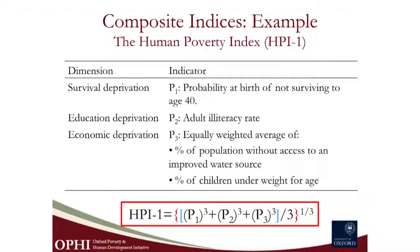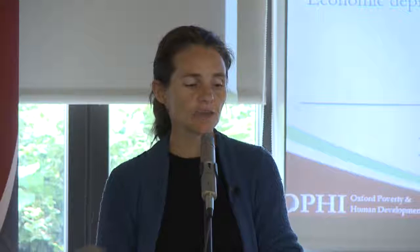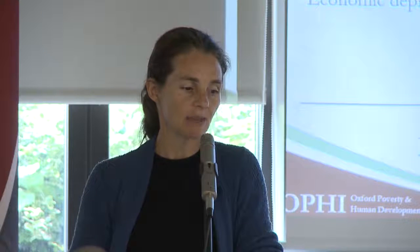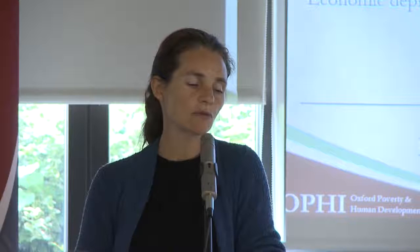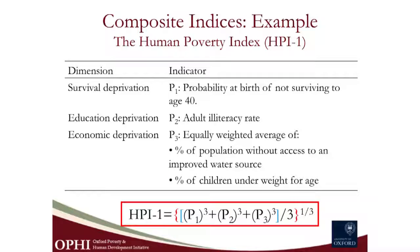In 1997, Sudhir Anand and Amartya Sen constructed the Human Poverty Index. At that time, there was not enough microdata available to construct an internationally comparable index using microdata from the same survey, so they had to use marginal measures. It is a general mean of order three, of three dimensions and four indicators: the probability of not surviving to age 40, adult illiteracy, the population without access to improved water, and the percent of children underweight for age. You cube each index, take the average, and then take the cube root. But this uses marginal measures, so it does not reflect the joint distribution.